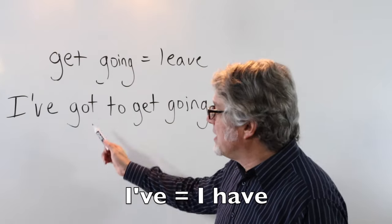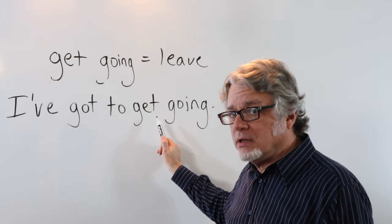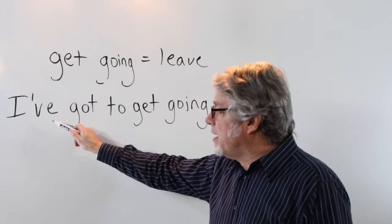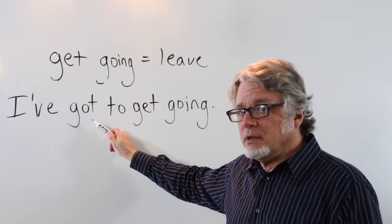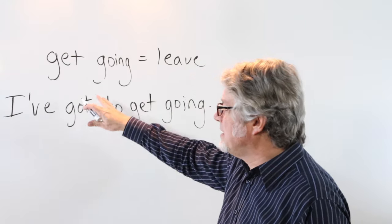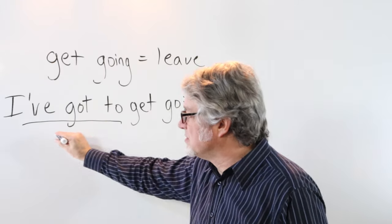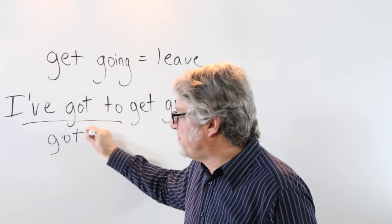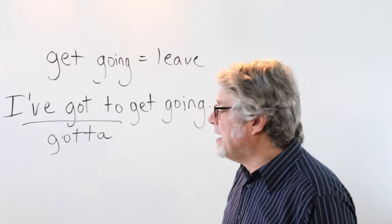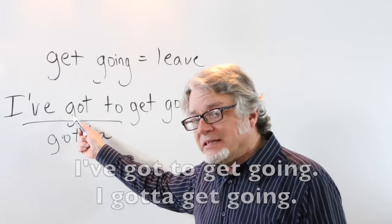You can use have got with get going. I've got to get going. You can combine have, got, and to, these three sections, and form gotta. I gotta get going. I've got to get going.